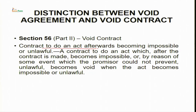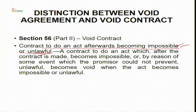A contract can become void if an act afterward becomes impossible or unlawful. Impossibility may be due to change in facts and circumstances. Unlawfulness may arise — for example, if you had entered into a contract to export a particular type of goods and later the government issued an order banning export of that product, that particular contract has become void because it has been rendered unlawful.